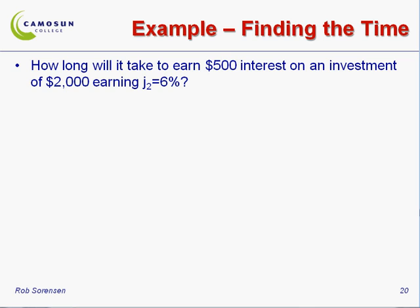Well here's the base numbers I'm starting with. Present value is $2,000, future value is $2,500. That would be the two plus the five, give me $2,500 altogether.